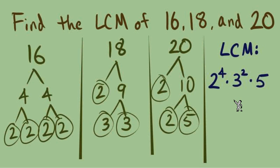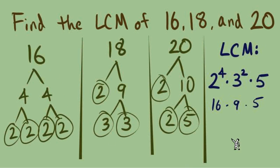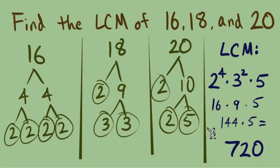Let's multiply all these together to get our numerical result. 2 to the fourth is 16; 3 to the second power is 9. So we have 16 times 9 times 5. That's 144 times 5, which equals 720. So the LCM of 16, 18, and 20 is 720.